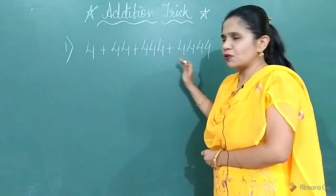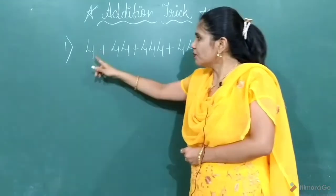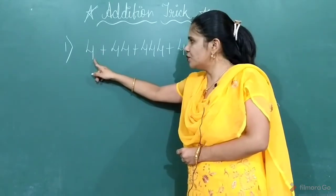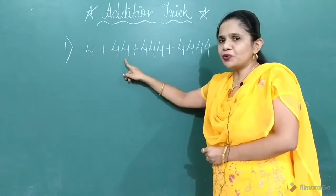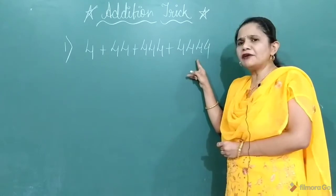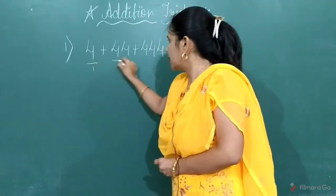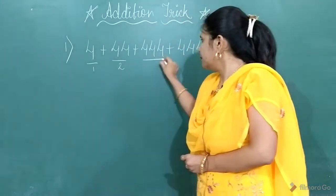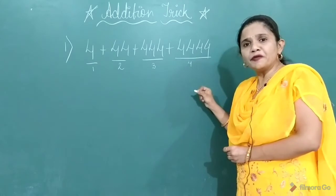Now here if you will observe, this is a series of digit 4. Now here if you will observe, here you can see only 1 digit. Next number you can see 2 digits. Next to that 3 digits and next to that 4 digits. Now here 4 is repeating 1 time. Here 2 time. Here 3 time. And at last it is repeating 4 times.